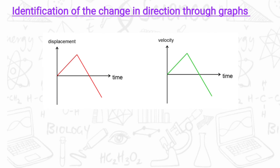Next, we should identify the change in direction through graphs. We have two graphs: one is a displacement-time graph and the other is a velocity-time graph.